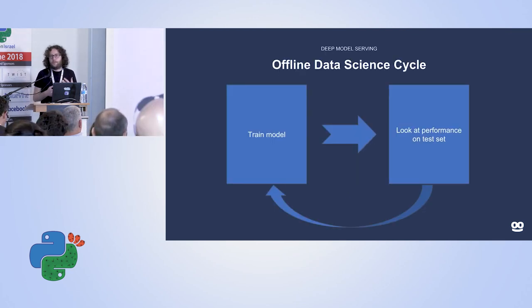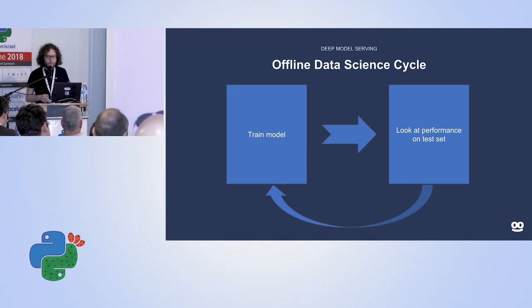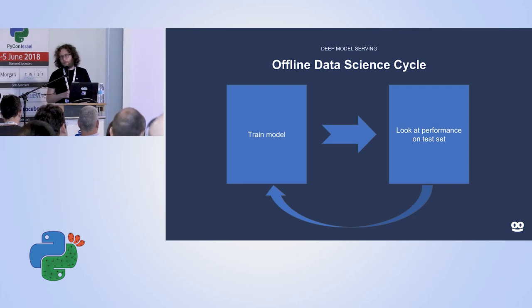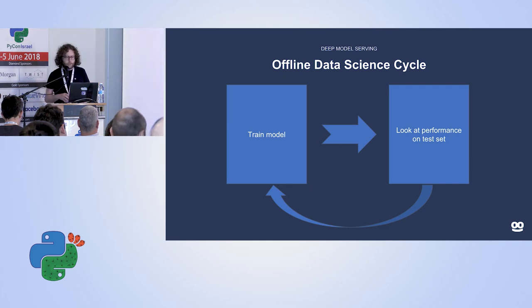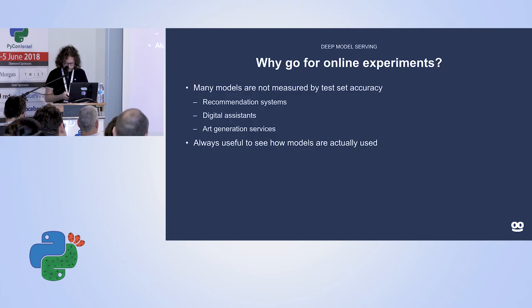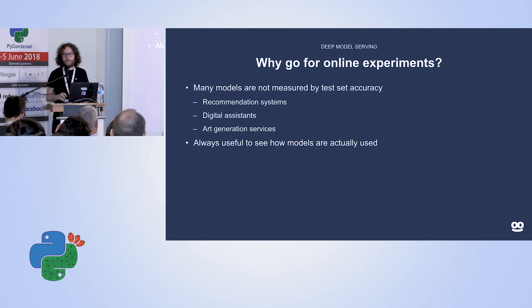To present the problem: usually when we're trained as data scientists, we talk about an offline flow. Most papers — certainly in academia — look like this: you train a model, then you have a holdout set, or maybe you submit your algorithm to Kaggle, look at the results, if they're bad you change your model. Everything is done locally, and this is your benchmark for whether what you're doing is right or wrong.